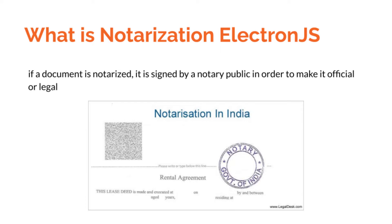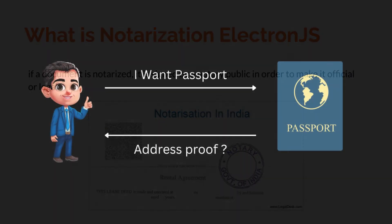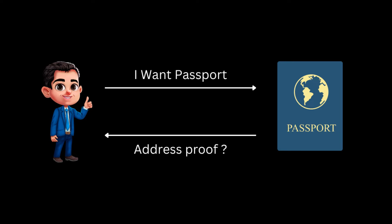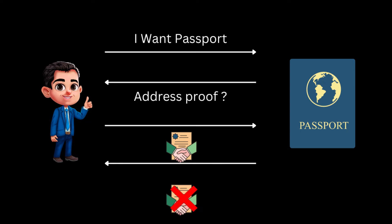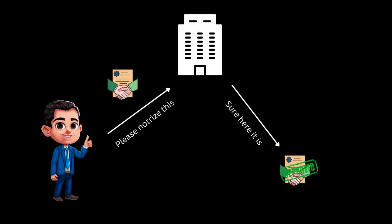This diagram is a perfect real-life example of notarization. Let's say some person X is living in a rented house and wants to apply for a passport. The passport office will ask him to provide address proof. Since he is living in a rented house he needs to provide his rental agreement. If he provides the rental agreement without notarization it will not be considered legal proof, because it is not notarized. There will be one authorized notary office that will take care of this entire process — in this case, the Government of India will verify.